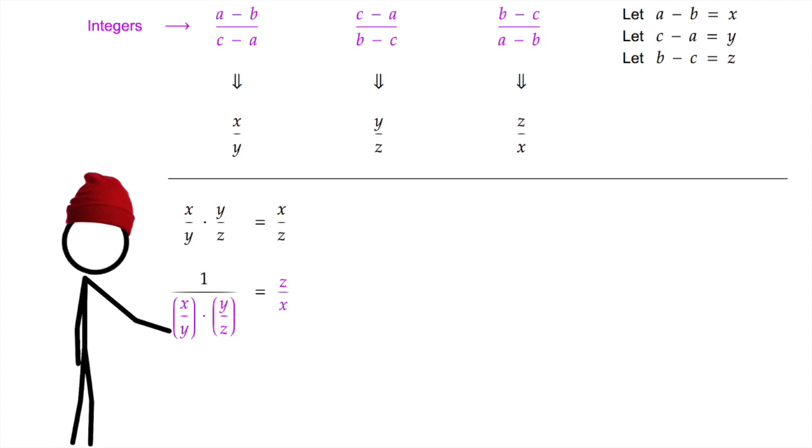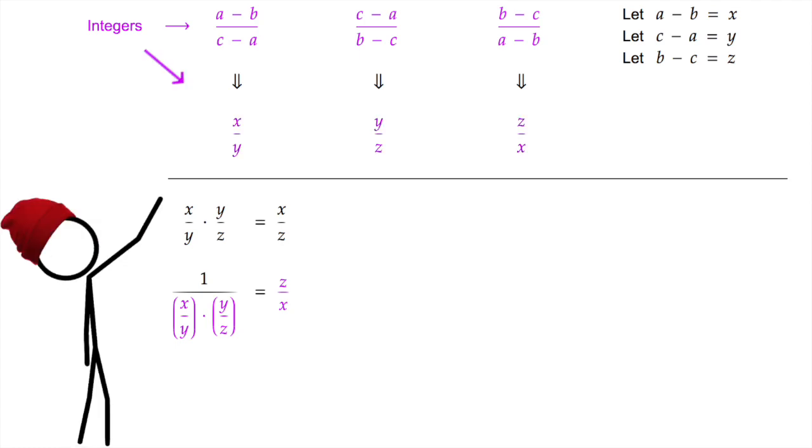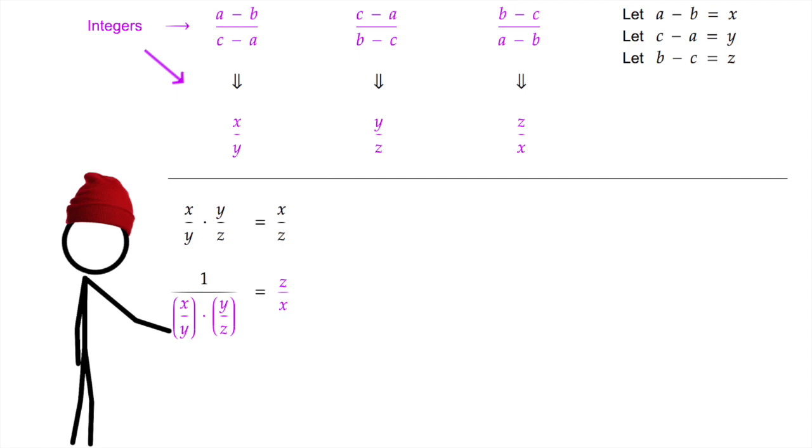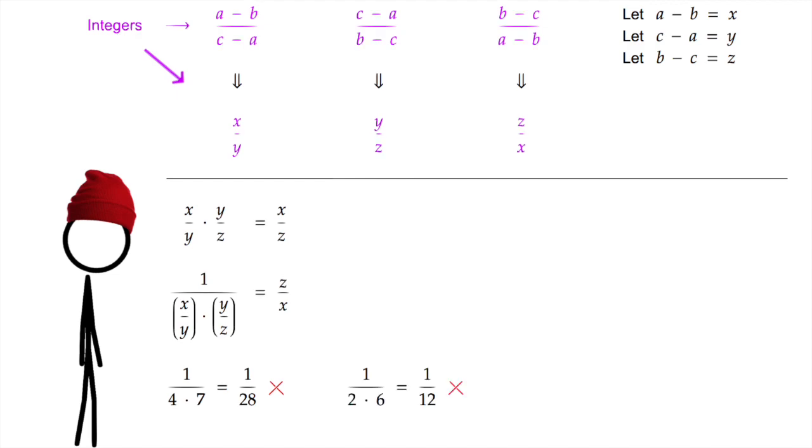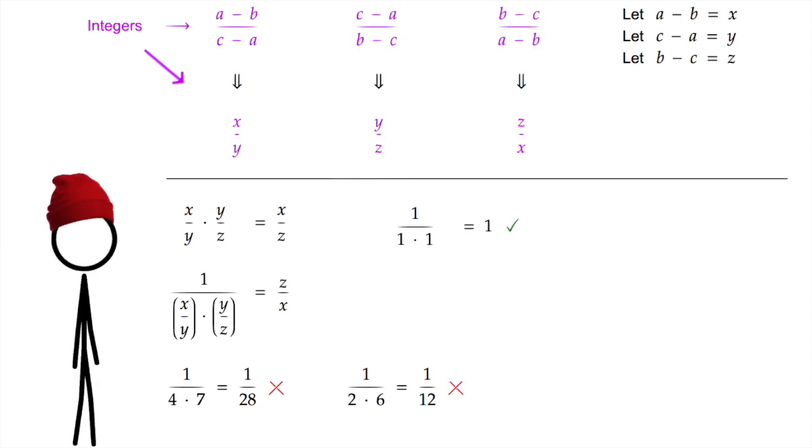But look closely. Remember, x over y, y over z, and z over x, they're still integers. So this equation is actually really, really weird. Like, it's super rare. Think about it. If we just randomly picked any two integers, say like four and seven, the reciprocal of their product is four times seven, so it's one over 28. Not an integer, not even close. Try another. Two and six, that'll be one over twelve. Doesn't work. In fact, for any two integers you picked, this equation will almost never work. In fact, the only time it will work is if both integers you pick are one. That's it. Only one. Nothing else. Or actually, I guess technically they could be negative one as well. Okay, but fine, whatever. Plus or minus one.